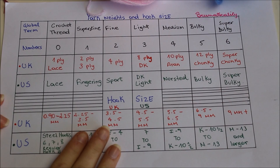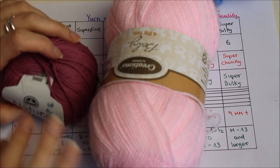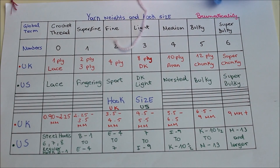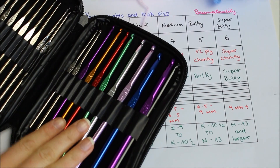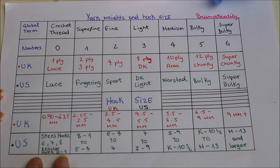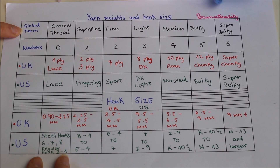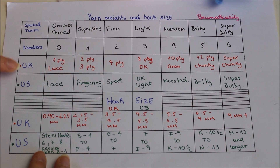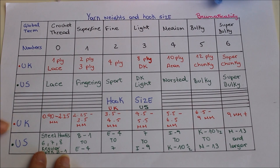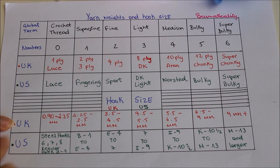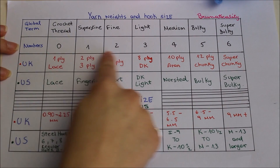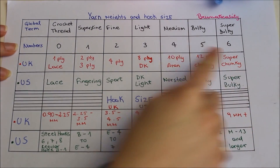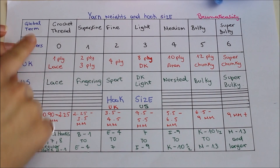I have the table here with me now, and also I have some yarns here so that I can compare the sizes with you guys, and I also have some hooks. So let me explain the table. Right here we have the global terms, right here we have the numbers, right here we have the UK sizes, here the US, and then here we have the hook sizes for UK and US. So I'm going to be mentioning the numbers: 0, 1, 2, 3, 4, 5, 6 — so that will be easier for me to explain.